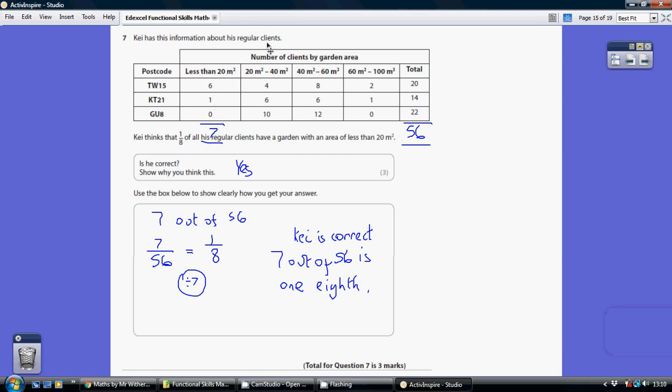How many regular clients does he have in total? Well we add up all of these clients over here to get 56. So 7 out of his 56 clients have a garden of less than 20 metres squared.